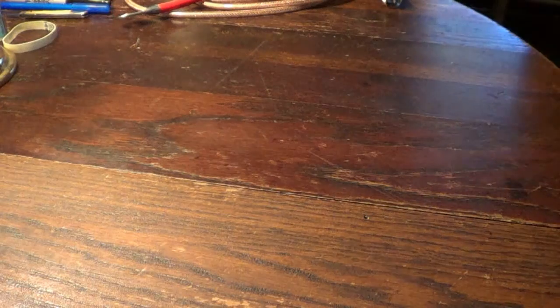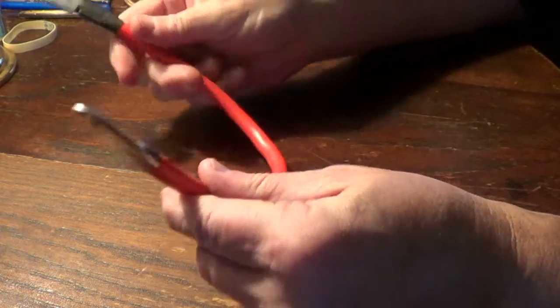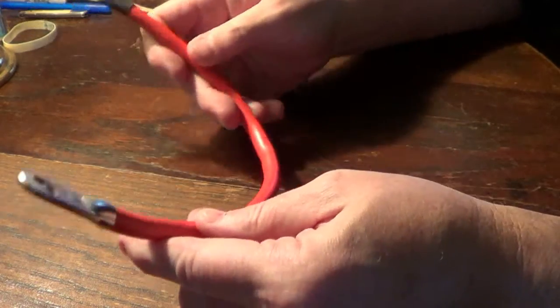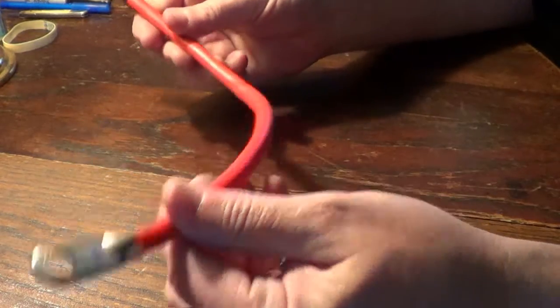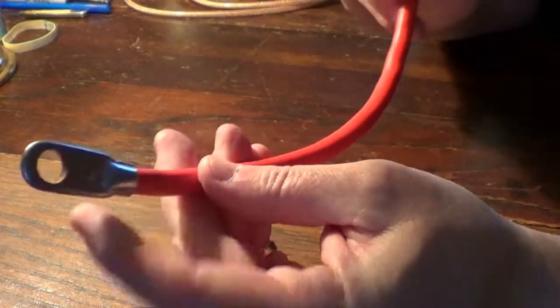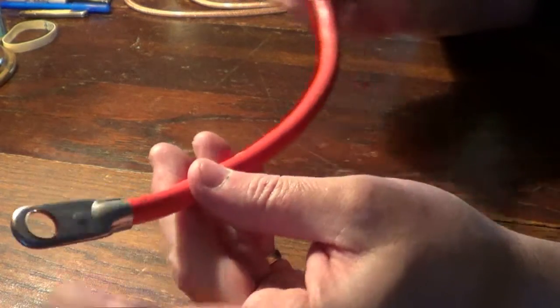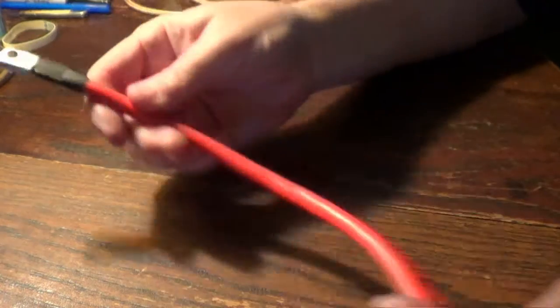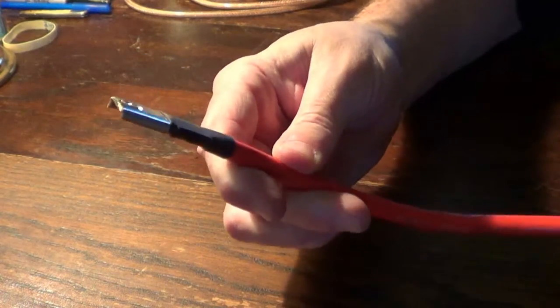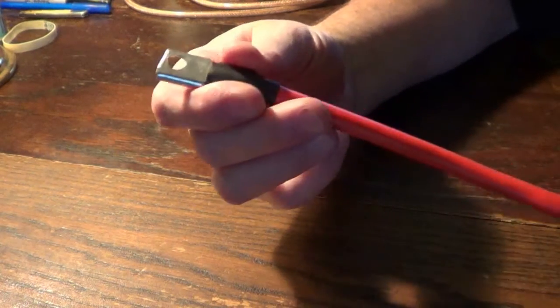I still am going to add a grounding strap. I picked this up a few days ago on my way home from work. It's simply a real short little battery cable with the perfect end that I need right here. This will mount to the base, to one of the mounting bolts of the Gunny Puck.